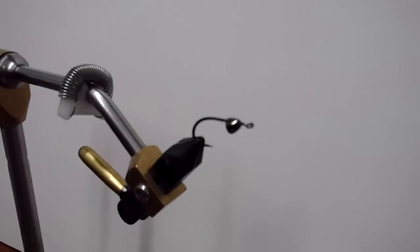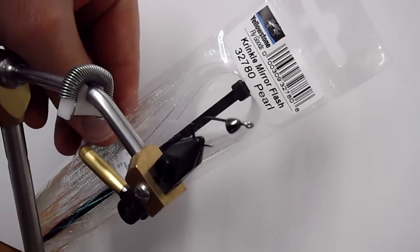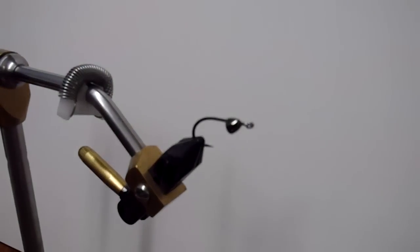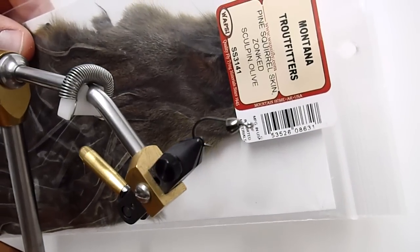Some crinkle mirror flash in pearl, and a pine squirrel skin here, pre-zonked in Sculpin Olive.